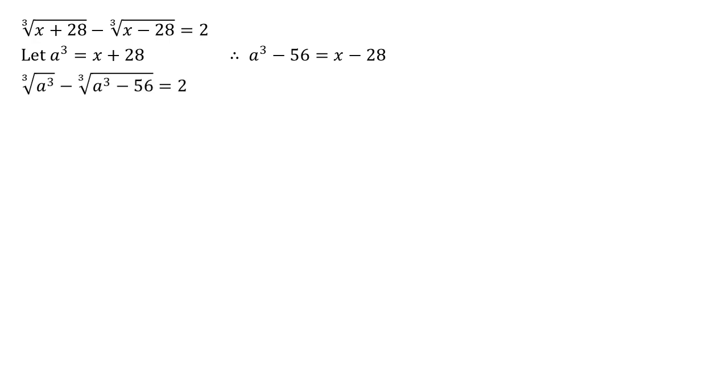Substitute them in. We get the cube root of a cubed minus the cube root of a cubed minus 56 is all equal to two. But the cube root of a cubed, that just leaves us with a. So we've now just got that one cube root.